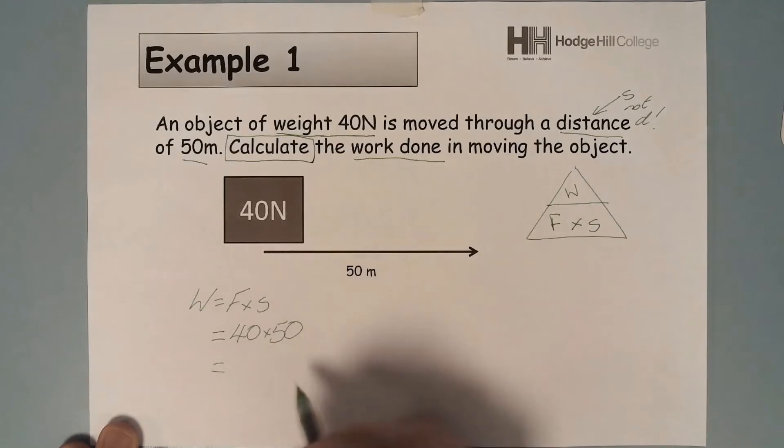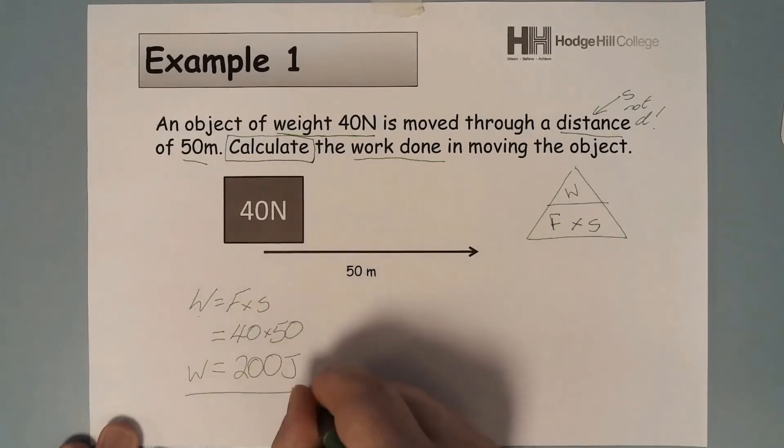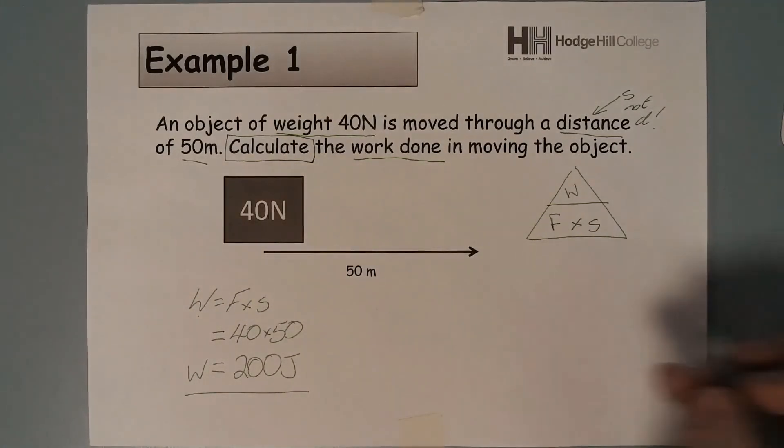Okay, so here I'm going to times these two numbers together, but I'm going to make a mistake. I'm going to forget one of the zeros. So I know this work is done, so it needs to be in joules. So I've made a mistake here.